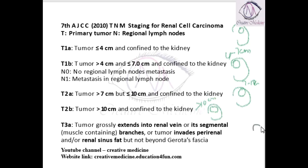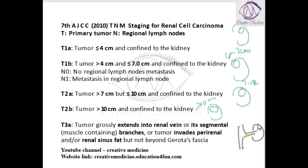Now, if the tumor extends into the renal vein and its branches, and if it extends into the perirenal tissue and the renal sinus fat, then it is T3a.